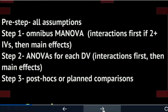Step two is to break it down and look at the ANOVA level for each dependent variable. Again, if you have a two-way, you first need to look at your interactions and then look at your main effects. And finally, you go on to step three only for those ANOVAs in step two that were significant.